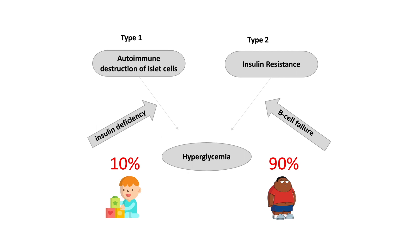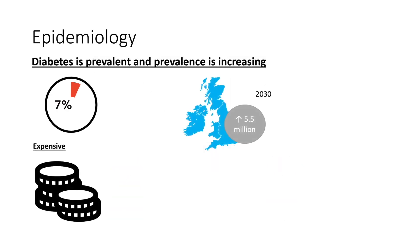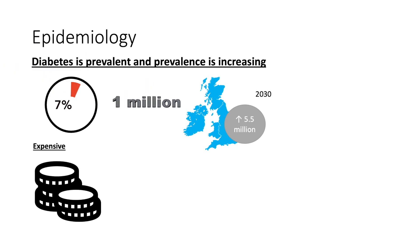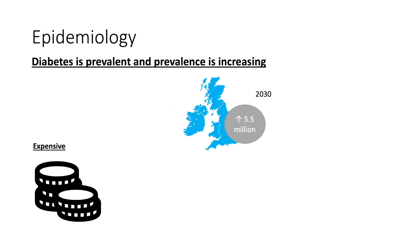As type 2 is the type Ashish has, we'll be looking into this type in more detail. Diabetes currently affects a whopping 7% of the entire UK population. It's estimated that 1 million people in the UK currently live with diabetes undiagnosed, and by 2030, 5.5 million people in the UK will have diabetes.